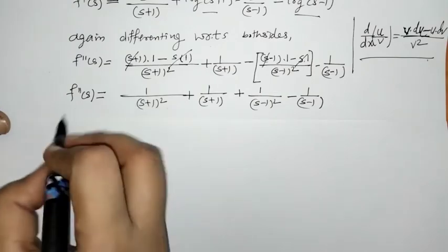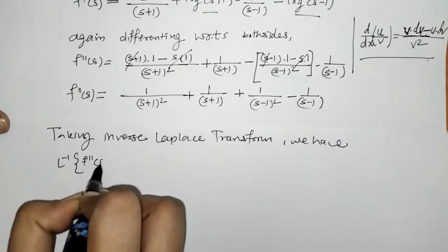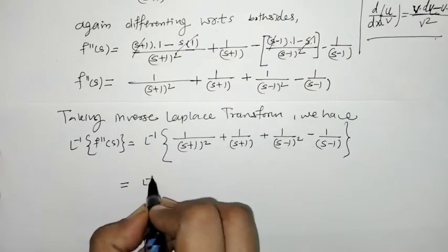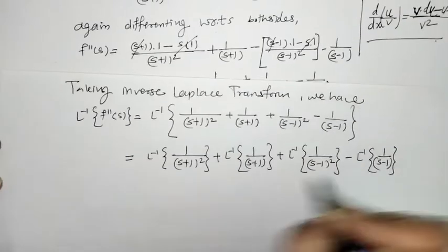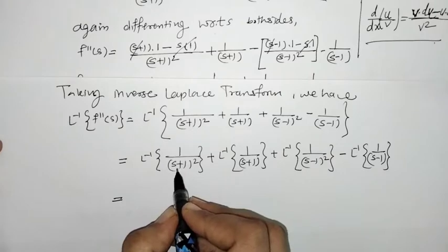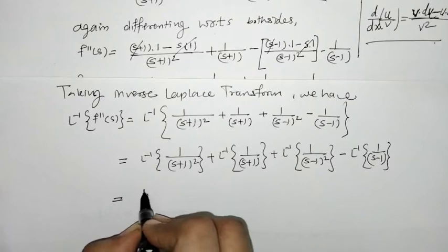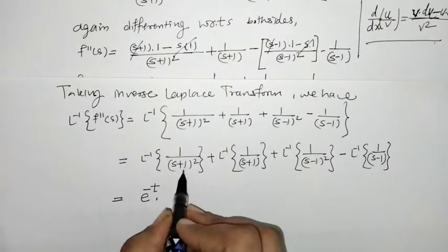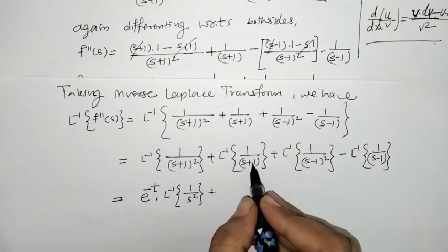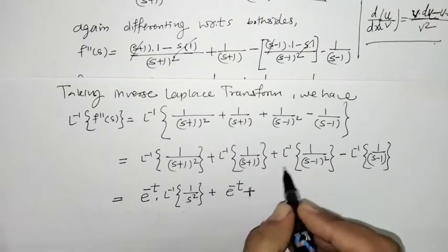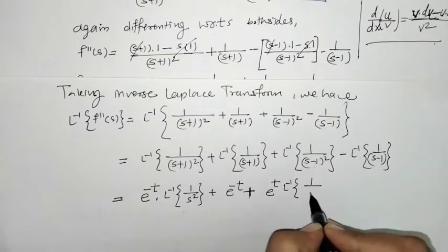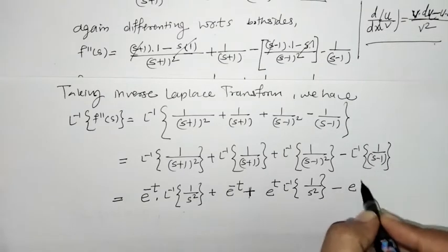Now we have to take the inverse Laplace transform. We operate L⁻¹ separately on each term. For 1/(s+1)², we apply the first shifting property of the inverse Laplace transform: take e^(−t) outside, and the remaining L⁻¹ of 1/s² gives t. Similarly, L⁻¹ of 1/(s+1) is e^(−t). For the (s-1) terms, we get e^t·t and e^t respectively.